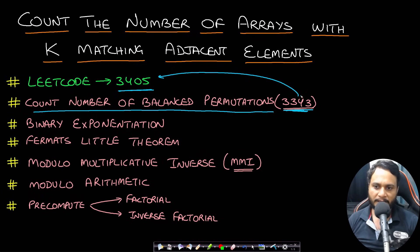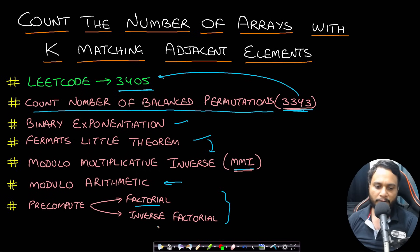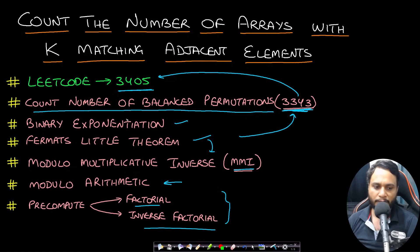Problem 3343 is harder compared to 3405 and had already occurred in the daily challenge last month. The topics required to solve this problem are binary exponentiation, Fermat's Little Theorem, how to calculate the modulo multiplicative inverse using Fermat's Little Theorem, some modulo arithmetic, and calculating factorial and inverse factorial. These have all been shown in 3343 and I have made a detailed video on it — the link will be in the description below.